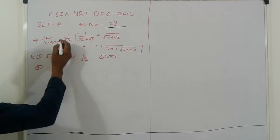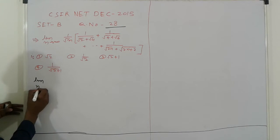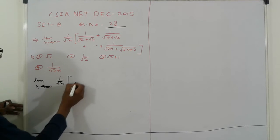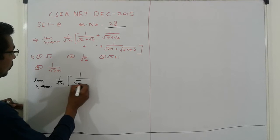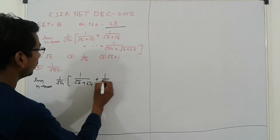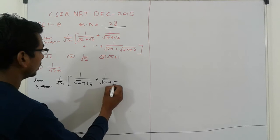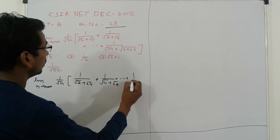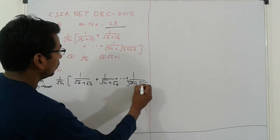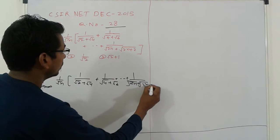That is given, so first we write down this. Limit of n tending to infinity is 1 upon under n, 1 upon root 2 plus under 4 plus 1 upon root 4 plus under root 6 and plus something plus upon 2n and under root 2n plus 2.